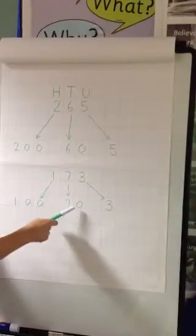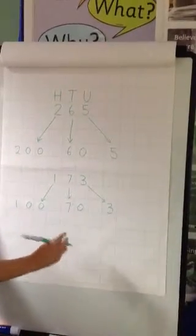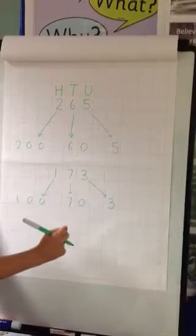When you add 100, 70 and 3 together, they make 173.